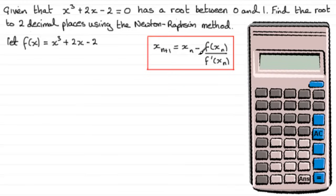Now to use the Newton-Raphson formula we need to find f'(x). f' is the first differential of f(x) with respect to x. So if we differentiate this with respect to x, for x³ it's 3x², for 2x it's plus 2, and the minus 2 goes to 0. So f'(x) equals 3x² + 2.